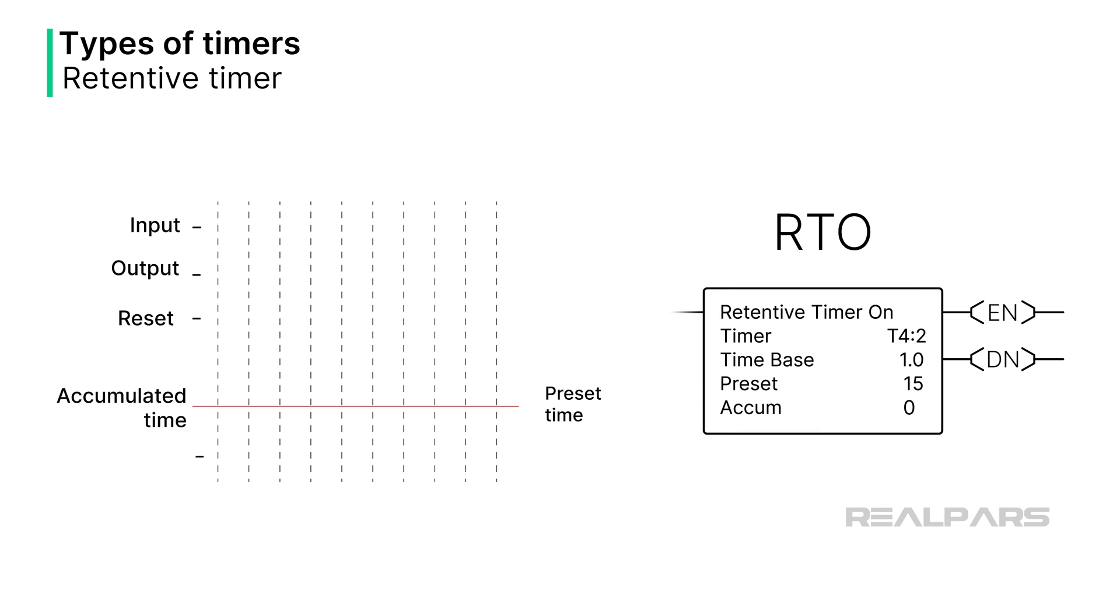This type of timer is like the on-delay timer, except the timer does not reset when the timer input goes false. The accumulated time is preserved, and when the timer is enabled again, it continues to accumulate time until the preset time is reached. At that point, the done bit is set. With a retentive timer, a reset instruction must be executed to reset the timer.